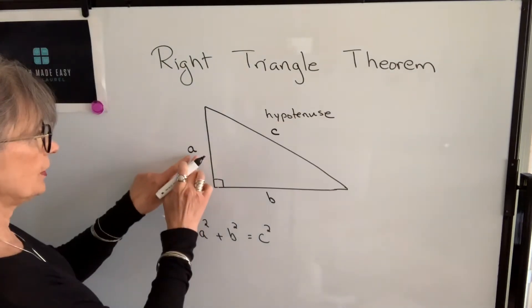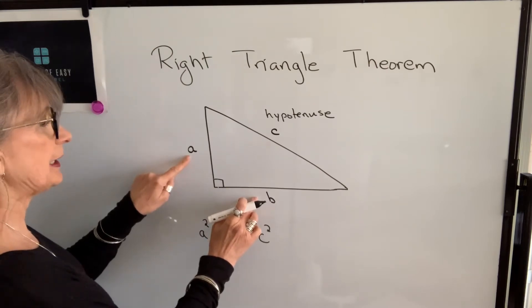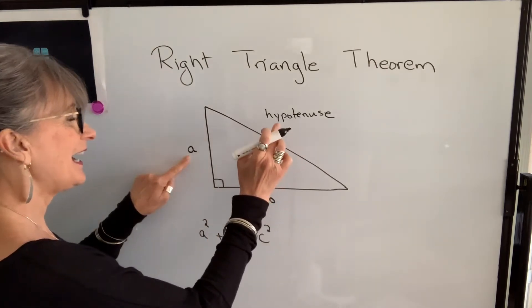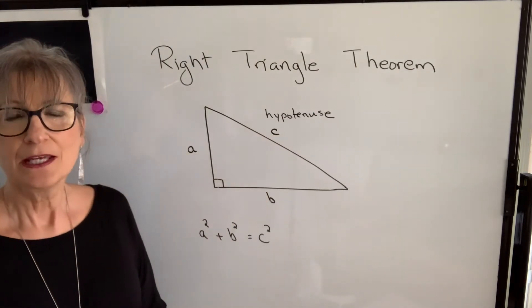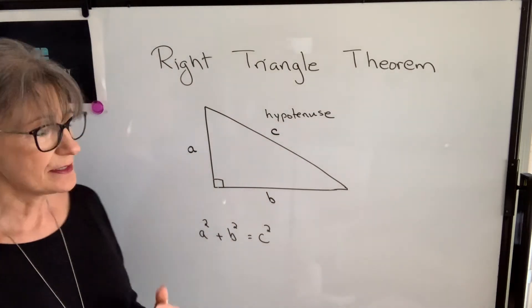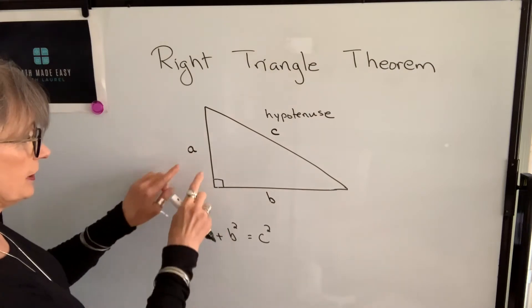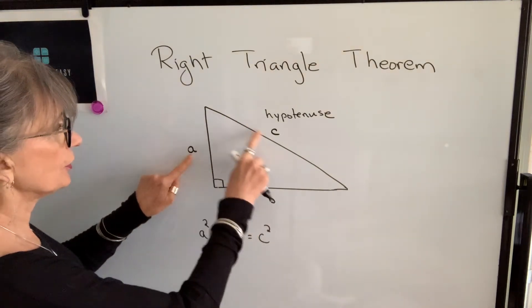So you can interchange these two sides. But side c has to be the side opposite the right angle. Typically, you'll know two sides and often in the construction or building trades, you're going to know a and b and you're going to be finding c.